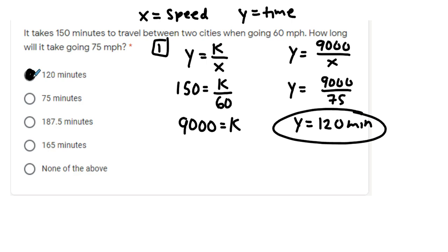You should use a little bit of common sense too and know, think about this. You're going to go faster, it needs to take less time. That means it's not going to be one of those two, it's got to either be 120 or 75.